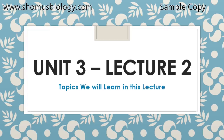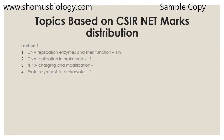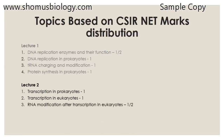Welcome back, this is Unit 3 Lecture 2. In this lecture we are going to end Chapter 3 of the CSNA syllabus. Remember in Lecture 1 we talked about DNA replication and translation. In this lecture we are going to talk about transcription in prokaryotes, transcription in eukaryotes, RNA modification after transcription in eukaryotes including polyadenylation, 5' capping, splicing, RNA editing, RNA silencing technology, RNAi, and CRISPR-Cas9.